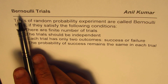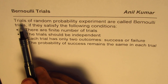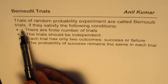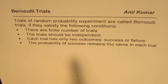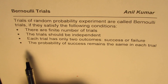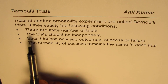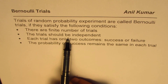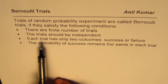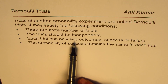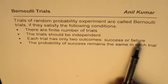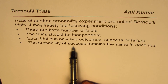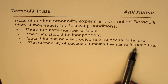The question here is understanding Bernoulli's trials. Trials of a random probability experiment are called Bernoulli's trials if they satisfy the following conditions. There are four conditions given in most of the books. These are: there are a finite number of trials; the trials should be independent; each trial has only two outcomes, success or failure; and the fourth one is the probability of success remains the same in each trial.